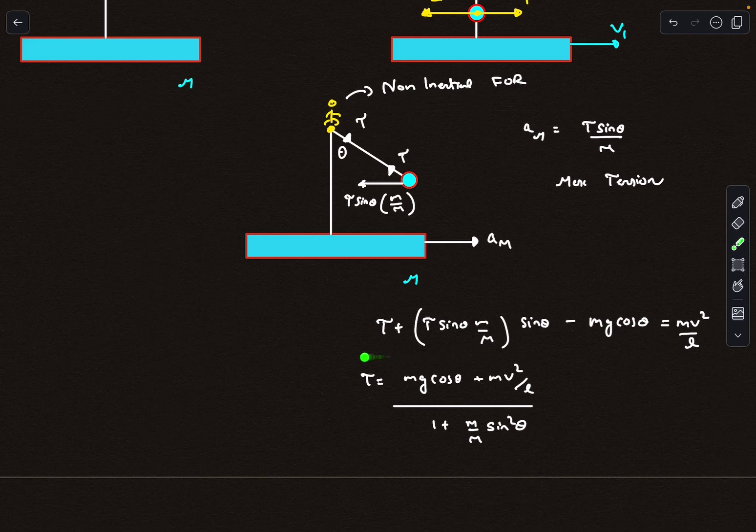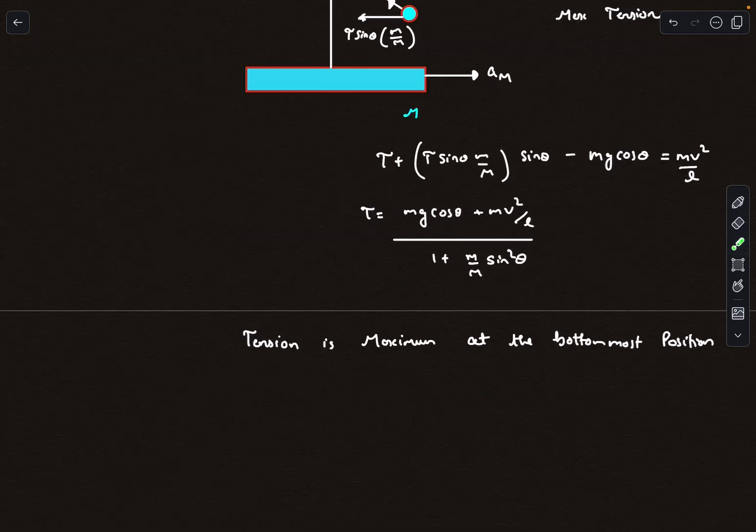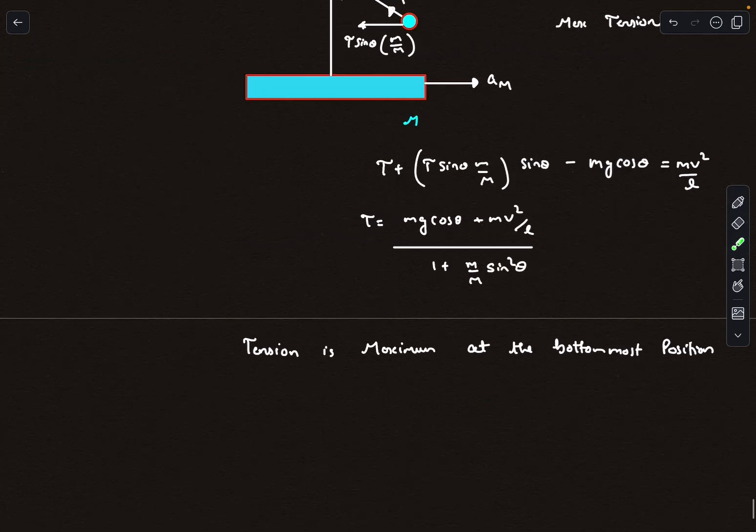If you rearrange the terms, T comes out to be this expression. This expression is pretty interesting. If you put theta equal to zero, mg cos theta will attain maximum and this denominator becomes minimum. Also we know by common sense that V would be maximum when it is at the bottommost position. When theta is zero, the numerator is maximum and the denominator is minimum, so clearly tension is maximum at the bottommost position.